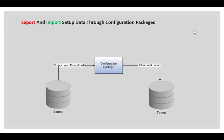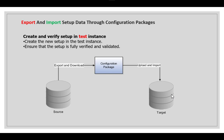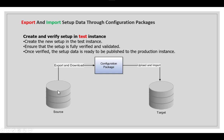The export and import setup data flow through configuration packages works as follows: the source is the test or gold environment, and the target is production. You export from the test environment via configuration packages, then upload to the target production environment. First, create and verify setup in the test instance — ensure the setup is fully verified and validated. Once verified, the setup data is ready to be published to production. Check and validate each offering or functional area one by one before exporting, then import and upload to the production instance.